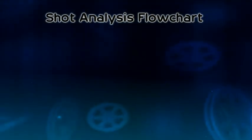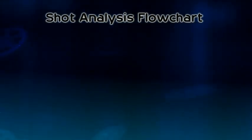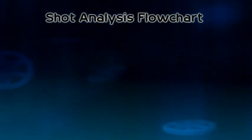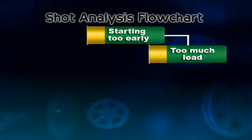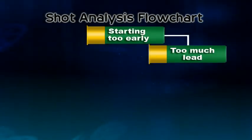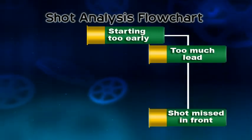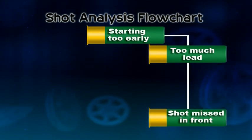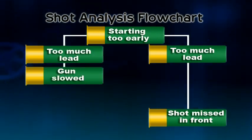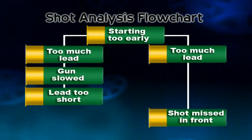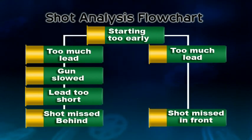A flow chart is a logical maze that basically says, if this happens, then this happens, and if that doesn't happen, then this happens, and so on and so forth. The idea of a flow chart is integral to problem solving, and we can use a flow chart to help us with problem solving and shooting.